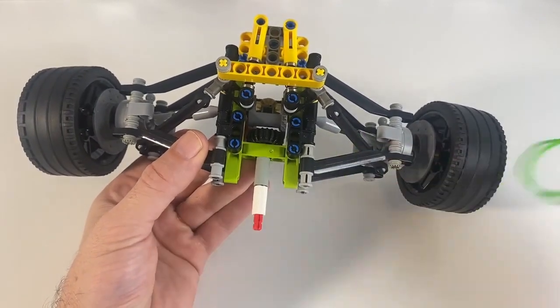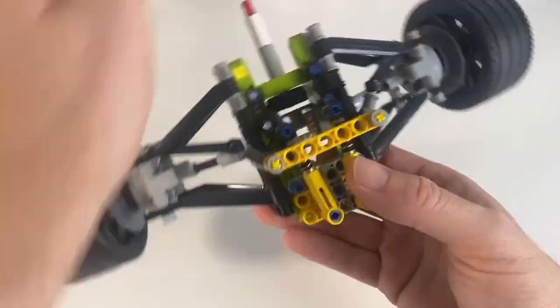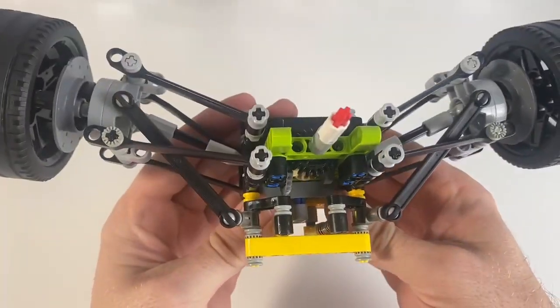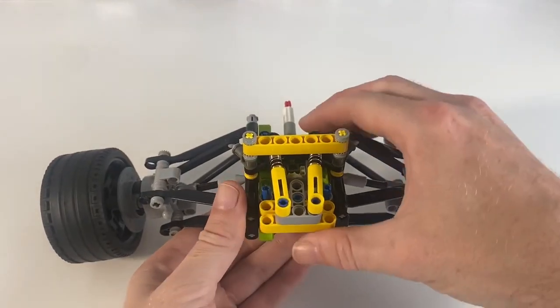What's up YouTube, welcome to another video. In this video I'm going to show you how to build a Formula One race car suspension system. This is for the rear of the vehicle so it doesn't have turning, but it does have a driveshaft.